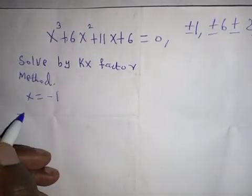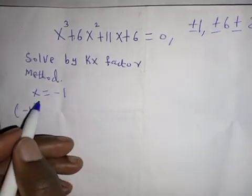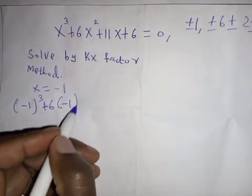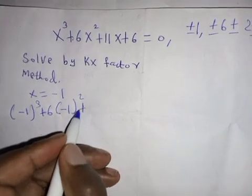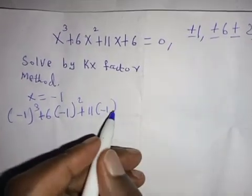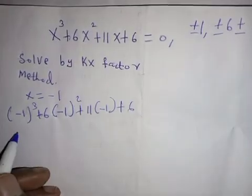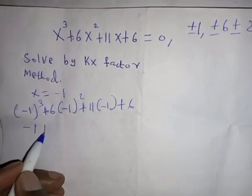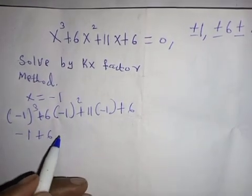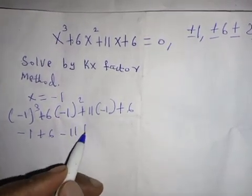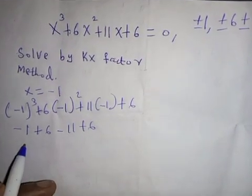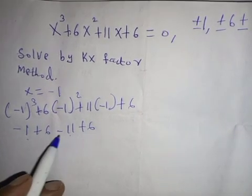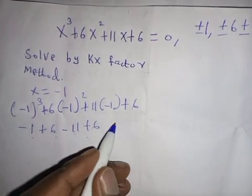We substitute negative one to see whether it is a factor of the cubic equation. So we compute negative one cubed plus six times negative one squared plus eleven times negative one plus six. Negative one cubed is negative one, negative one squared is one, one times six is six, eleven times negative one is negative eleven, plus six. That gives us: negative one plus six minus eleven plus six, which equals zero.